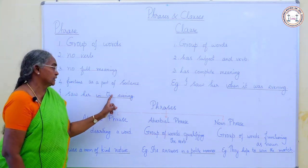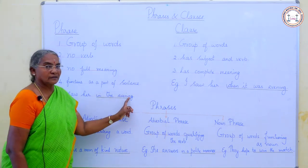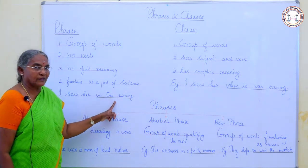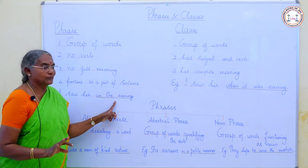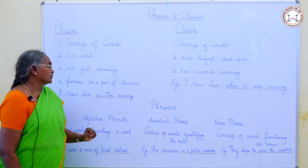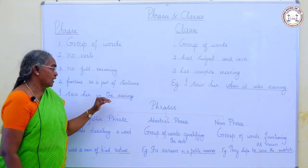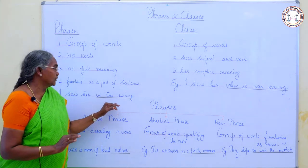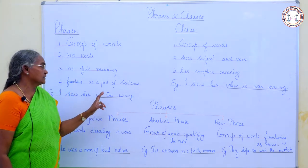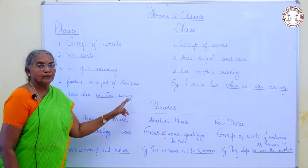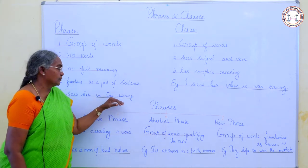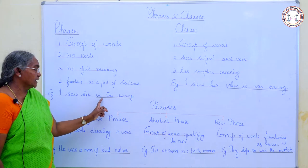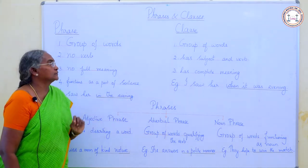You can see it is a group of words — 'in the evening.' Is there any verb here? No verb. It has no verb. And does it have full meaning? No, it does not have full meaning. And it functions as a part of a sentence. So, this is a phrase. In the sentence 'I saw her in the evening,' 'in the evening' is a phrase.